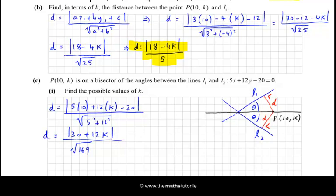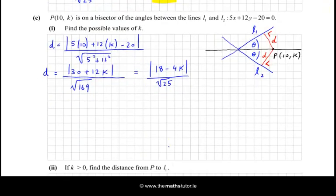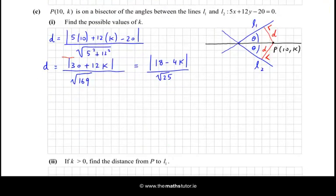Now that's d, but we also know that d is what we described earlier on. OK, from above we also know that d is |18 - 4k| all over √25. So I have an equation here. If we ignore the d on the left hand side, I have this equation here, and what I'm going to do is I'm going to solve this for k.